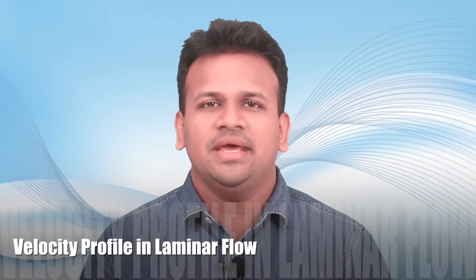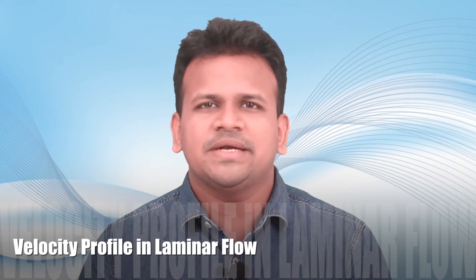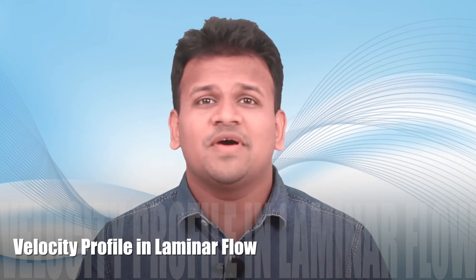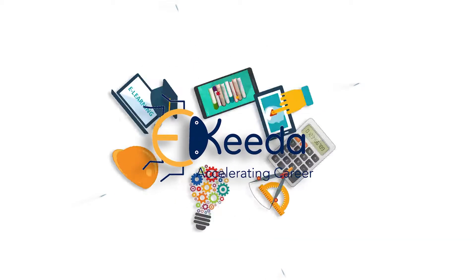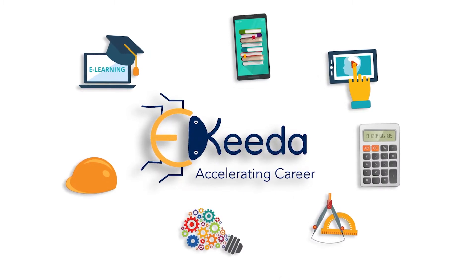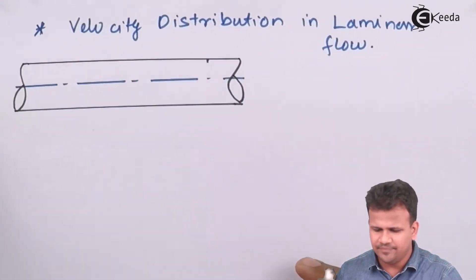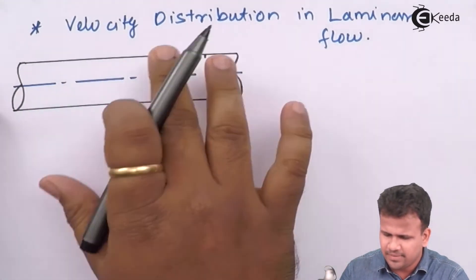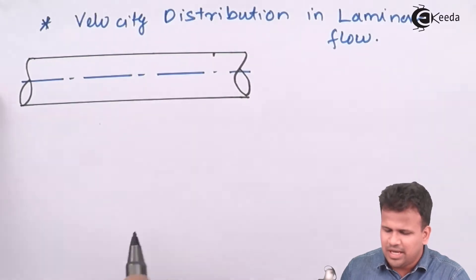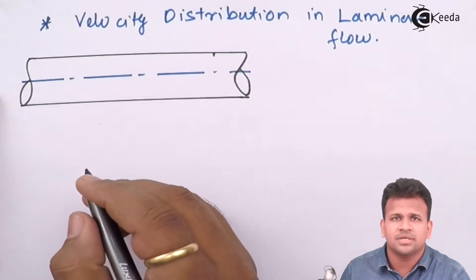As we have seen what shear stress is in a circular pipe for laminar flow, let us now see what is the velocity distribution for that pipe. We will consider a circular pipe having some cross-sectional area dA, and we have drawn the front view to see the velocity distribution.